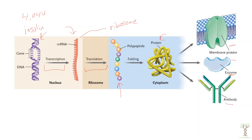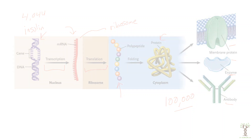Antibodies are proteins. We have structural proteins. There are about a hundred thousand different proteins in our body that have multiple functions.